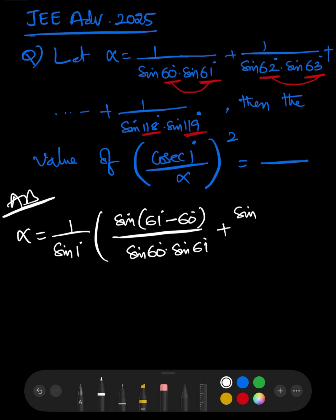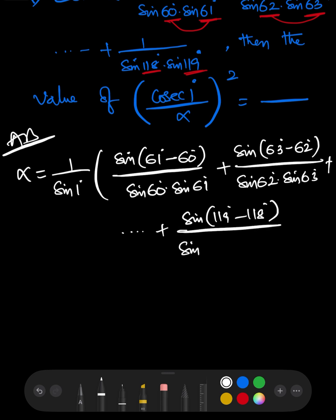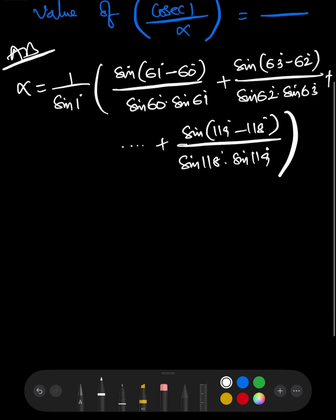Similarly, sin 1° in the second term can be written as sin(63° − 62°) divided by sin 62° · sin 63°, and so on. The last term has sin 1° = sin(119° − 118°) divided by sin 118° · sin 119°.